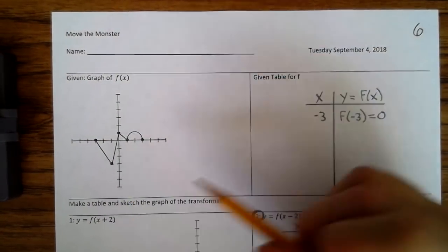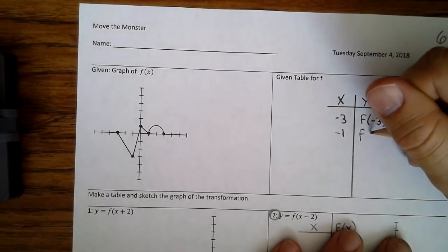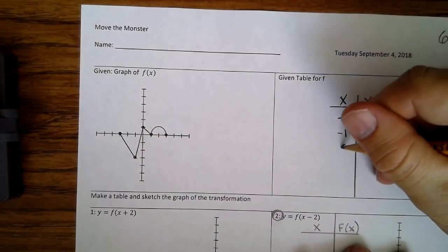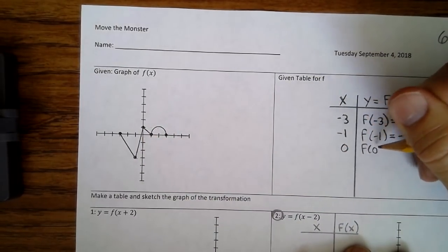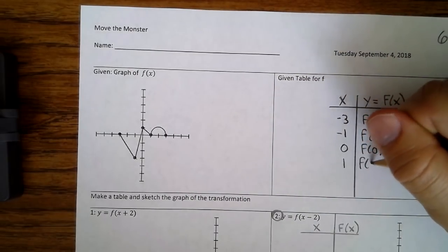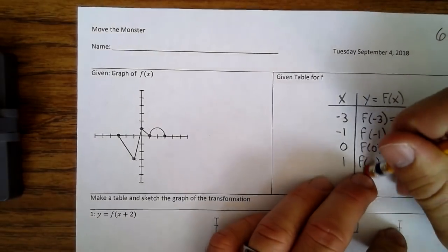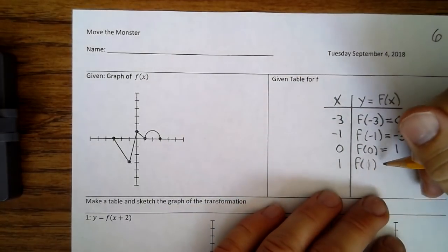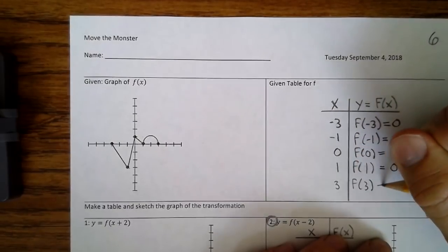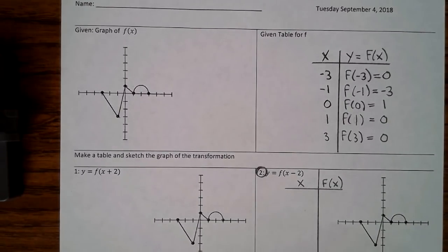Here we have negative 1, negative 3. So that's f(-1) = -3. This point is 0, 1. So that's f(0) = 1. And then 1, 0. So f(1) = 0. And then 3, 0. So that's f(3) = 0.